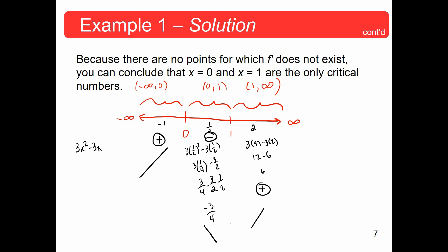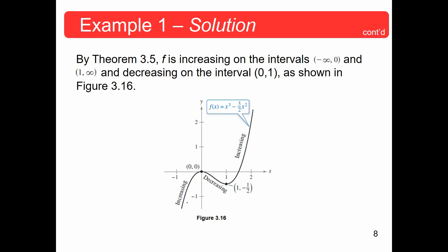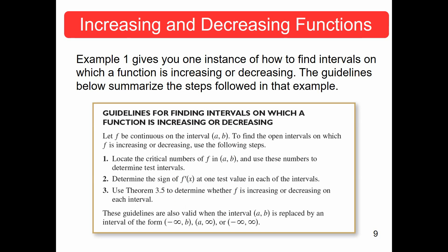So we can conclude: the interval from negative infinity to zero is increasing, the interval from one to infinity is also increasing, and the interval from zero to one is decreasing. Here are the actual guidelines: Step one, locate the critical numbers. Step two, create test intervals using these critical numbers. Step three, determine the sign of the derivative at a test value inside each interval and use the theorem to determine whether the function is increasing or decreasing on each interval.